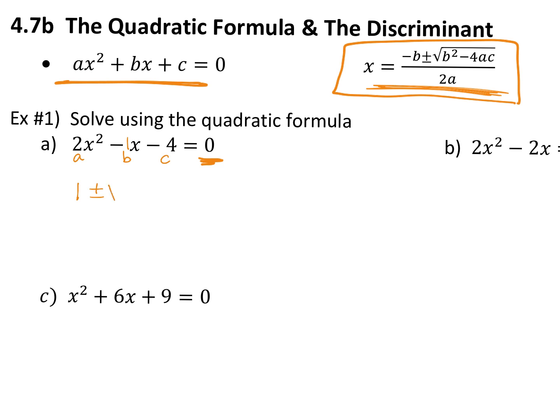Plus or minus the square root — here's where a lot of mistakes get made. B is negative one, but we're squaring it. Put parentheses around it: negative one squared. So negative one squared minus four times A, which is two, times C, which is negative four. That's the top of our equation.